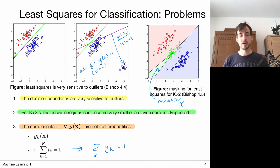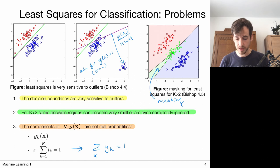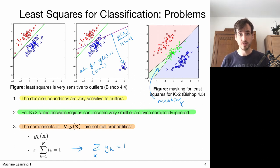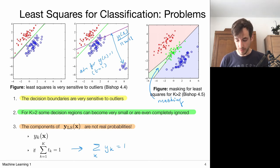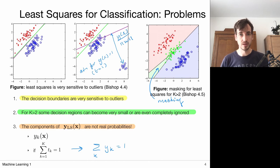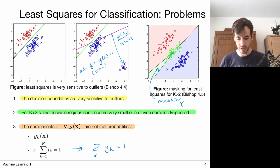That sums it up for least squares for classification. It's a simple algorithm with closed-form solutions, but there are some problems associated with it. In the next video, I'm going to consider a different type of discriminant function for classification.